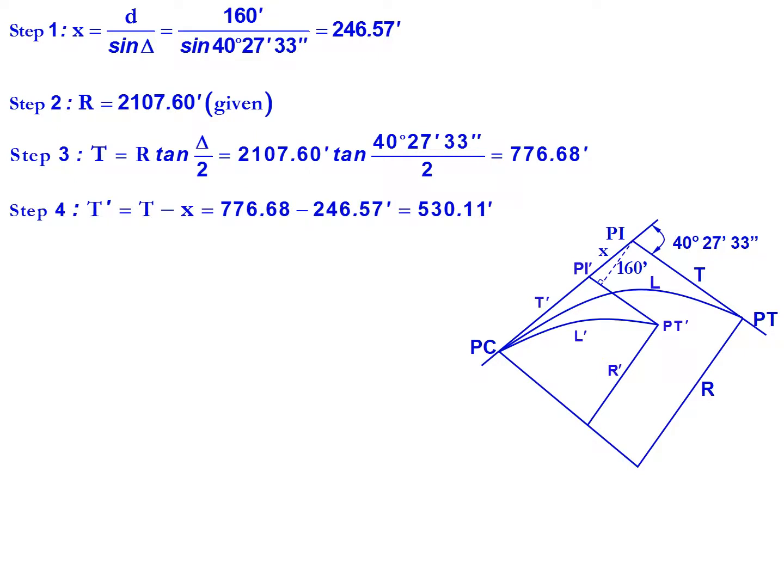To find our new tangent length, T prime, we're going to subtract X from our tangent and that's because we're moving inward so that X is negative. So T minus X, 776.68 feet minus 246.57 feet, gives us a new tangent length of 530.11 feet.